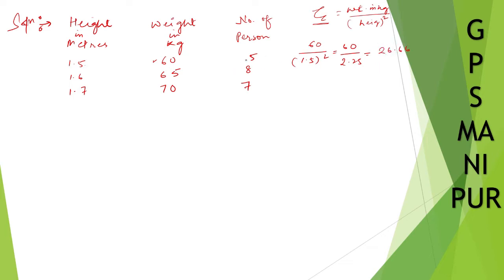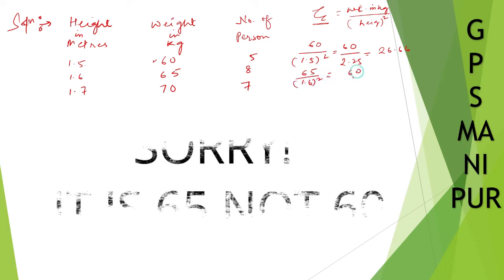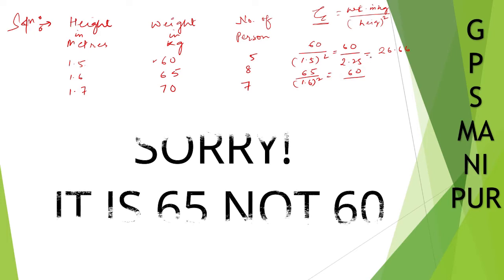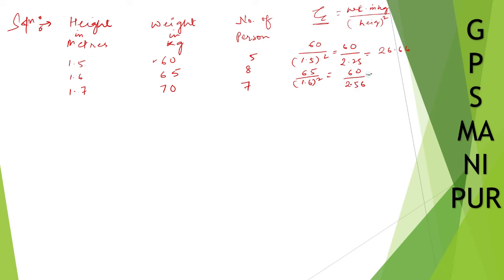For this one, 65 divided by 1.6 square. It will be 60 divided by 1.6 into 1.6, it will be 2.56. And if you do this calculation, you are going to get 25.39.